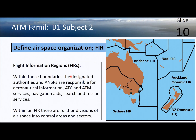In airspace organization, FIRs or flight information regions are the limits of responsibility for each nation's air navigation service provider. For its FIR, the ANSP has to provide aeronautical information, air traffic control and management services, navigation aids, and an alerting system so that when aircraft are overdue they will contact the search and rescue authorities.